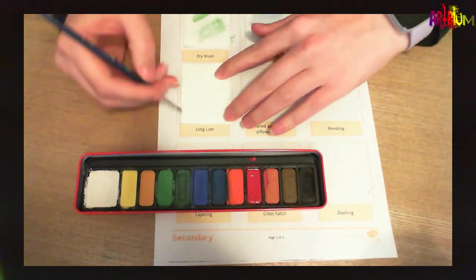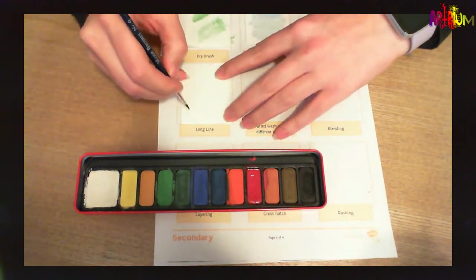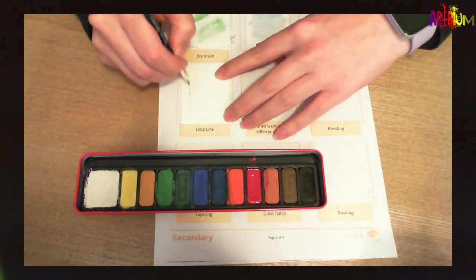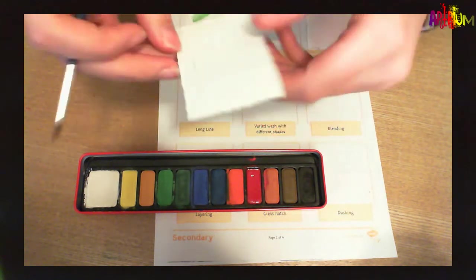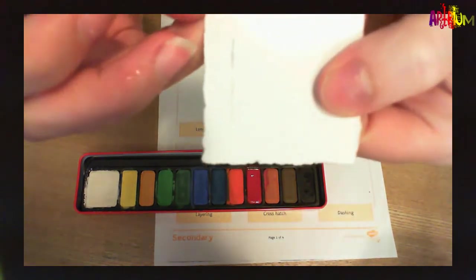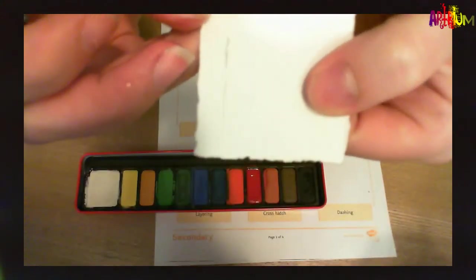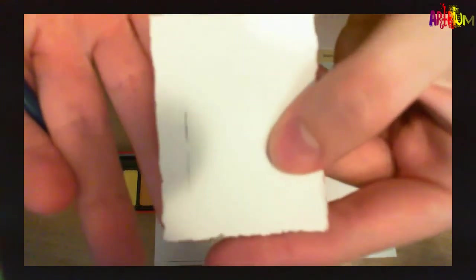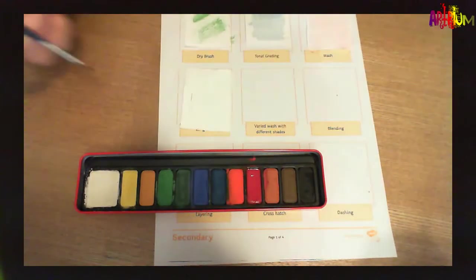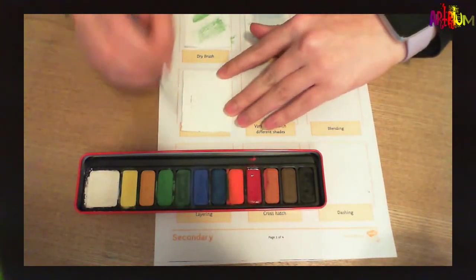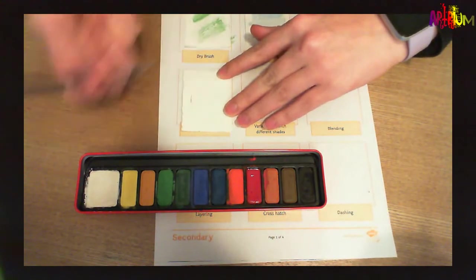And show you different thicknesses of lines. So I'm going to start with a really thin one. It's almost like a hairline. You can barely see it. But that would be kind of, if you were going to do something really detailed, then I would recommend very thin lines, very gently applying the paint.